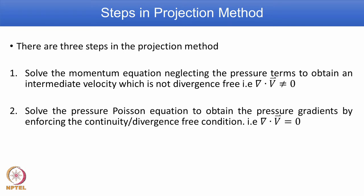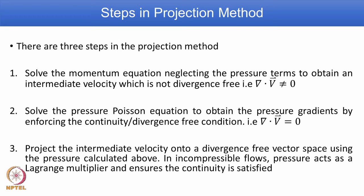Based on these velocities, we set up a Poisson equation for pressure, which is linked with the continuity equation. Once you solve the Poisson equation you get the pressure field. We then project this intermediate velocity onto the divergence-free vector space using the pressure calculated above. This pressure acts as a Lagrange multiplier and ensures continuity is satisfied — this is the important step in the projection method.